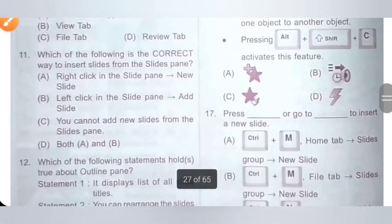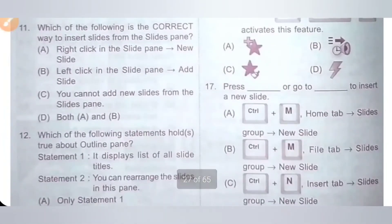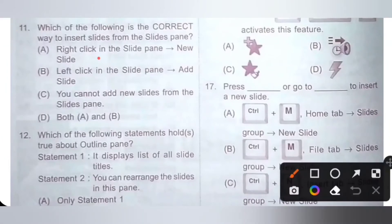Eleventh one. Which of the following is the correct way to insert slides from the slides pane? Option A: Right-click in the slide pane, then New slide. Option B: Left-click in the slide pane, then Add slide. Option C: You cannot add new slides from the slides pane. Option D: Both options A and B. We can add a new slide by right-clicking in the slide pane and then selecting New slide. Option A is the correct answer.